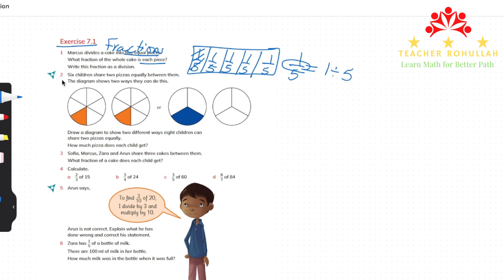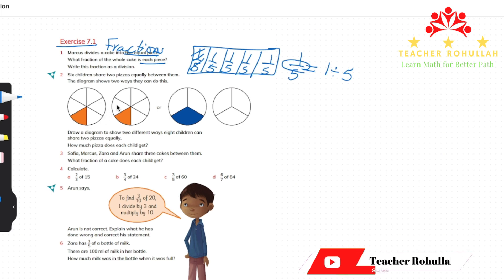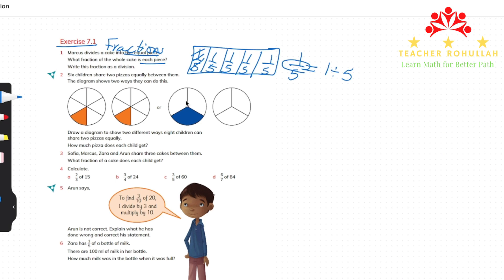Question two says six children share two pizzas equally between them. The diagram shows two ways they can do this. In the first way, they cut the pizzas into six equal pieces and each child gets two-sixths. In the second way, they cut each pizza into three equal pieces and each child gets one-third.